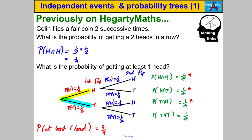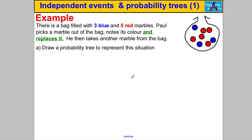Let's go on and try some more questions about successive events using probability trees. Pause the video and have a go. There is a bag filled with three blue and five red marbles. Paul picks one out of the bag, notes its colour — and this is really important — he replaces it after. He puts the marble back in, then takes another marble. Draw a probability tree to represent this.